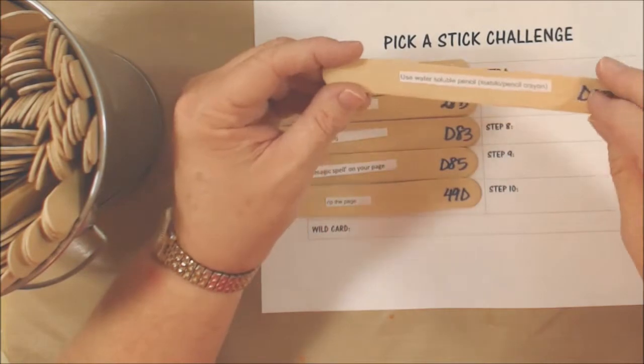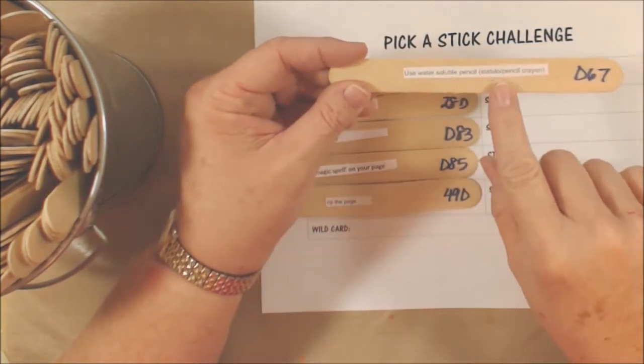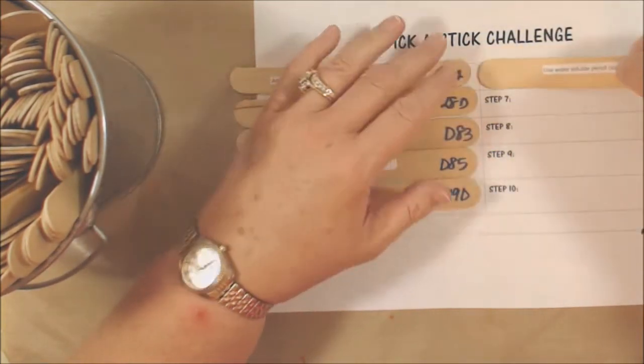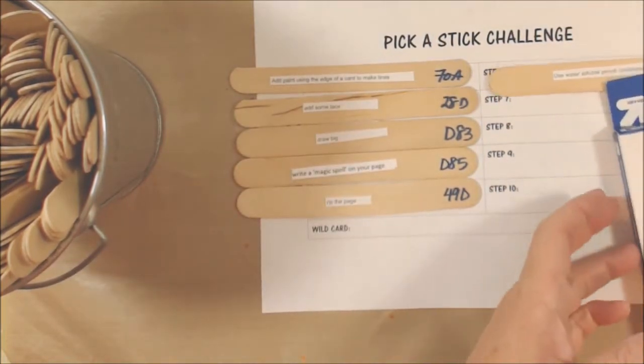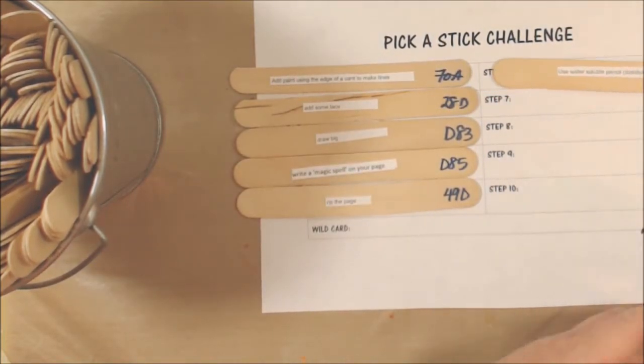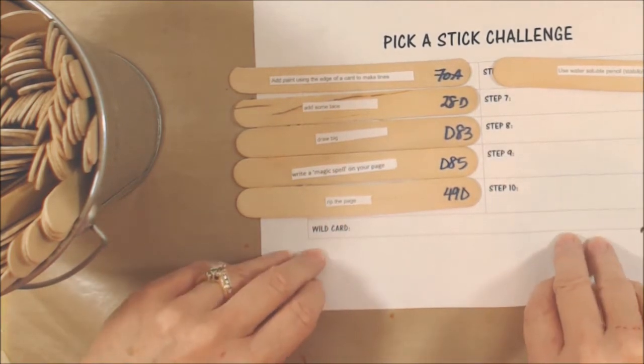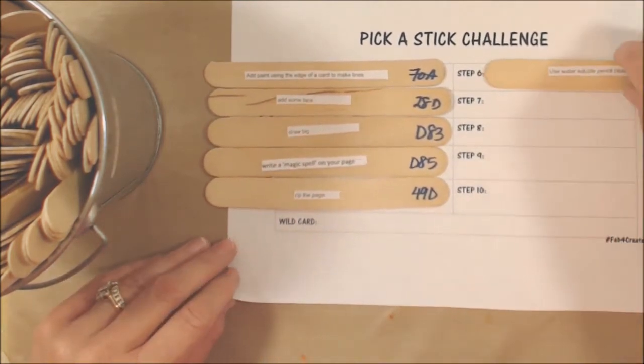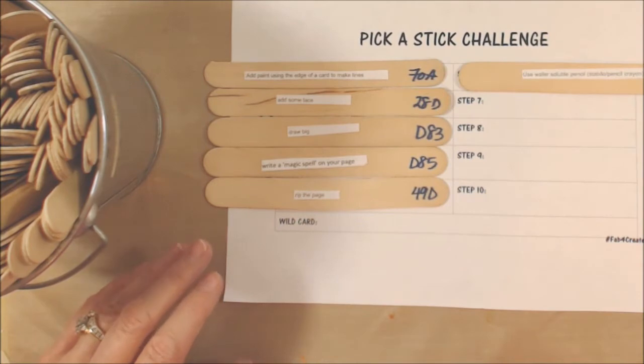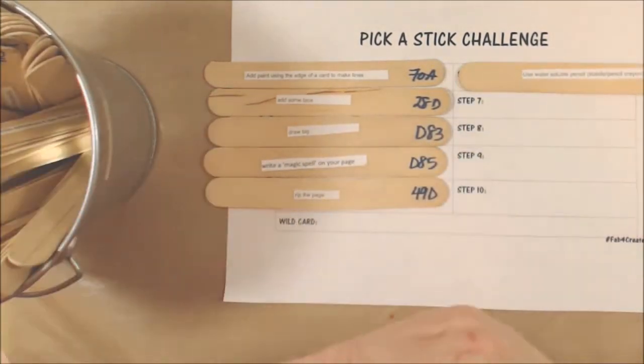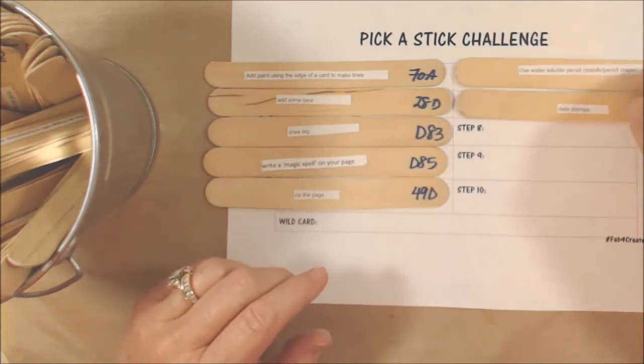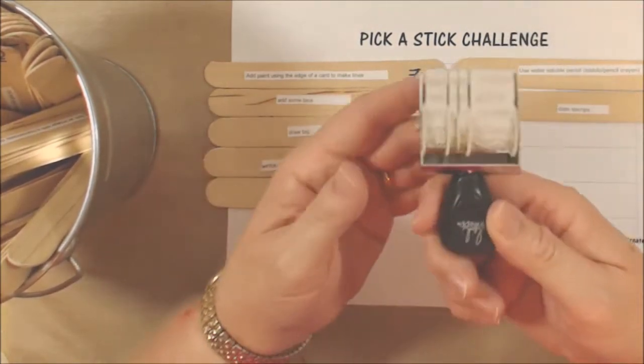Step six is use a water-soluble pencil like a Stabilo or a pencil crayon, or you can even if you have something like gelatos that's a water-soluble crayon, so you could use that also. Inktense pencils are water-soluble, watercolor pencils, anything like that.